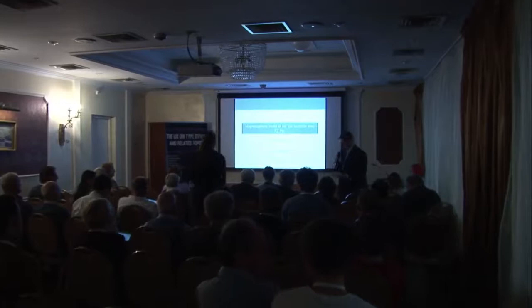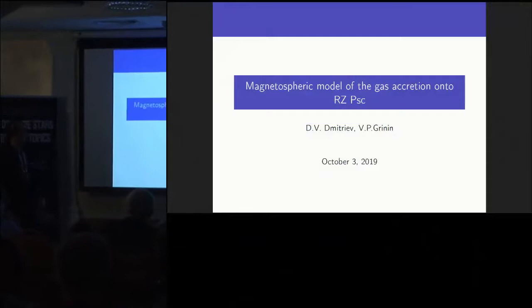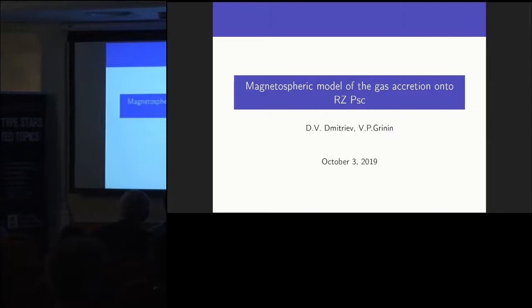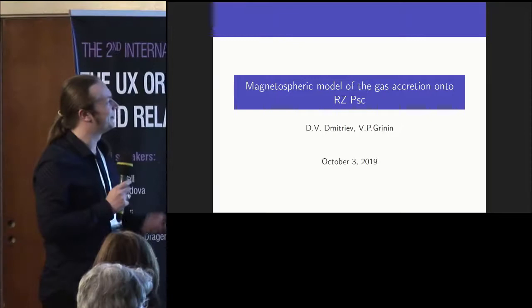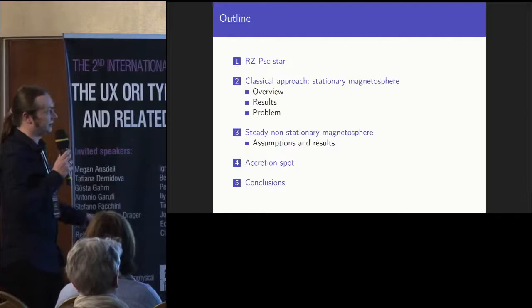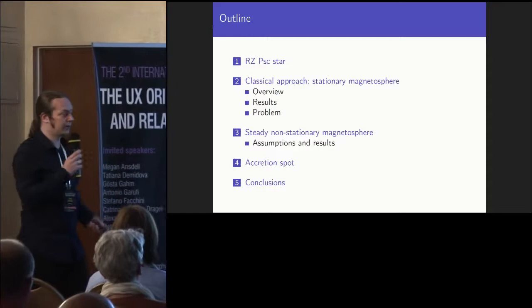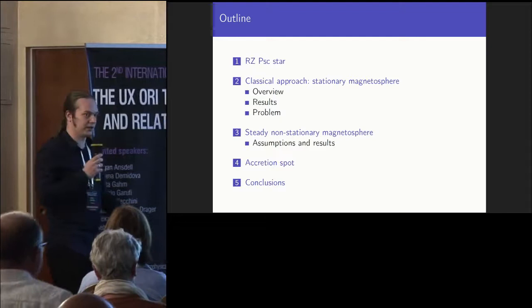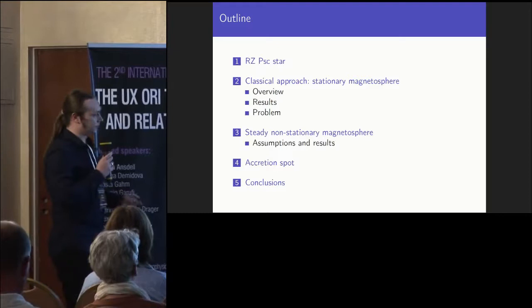Okay, so we come to our very last talk. Dennis Dimitriev will talk about magnetospheric model of the gas accretion onto RZ Piscium. Yes, my name is Dennis Dimitriev, and I will talk about exactly how the magnetospheric accretion model onto the RZ Piscium star. And here's a small outline of my talk. Of course, I will start with a small brief review of the RZ Piscium star itself. Then I will discuss our attempts to model the star with magnetosphere. And finally, I will discuss the impact of the accretion spot onto the line profile. And of course, in the end, there will be some conclusions.